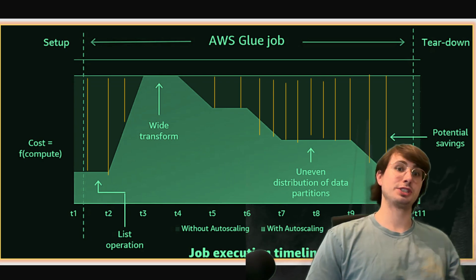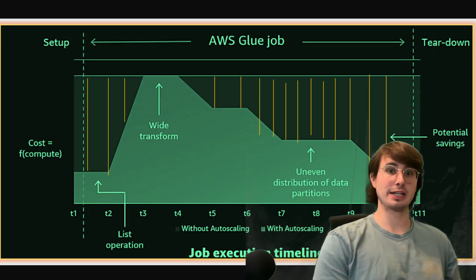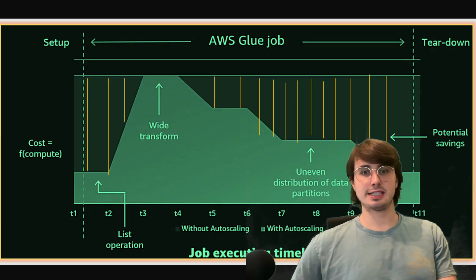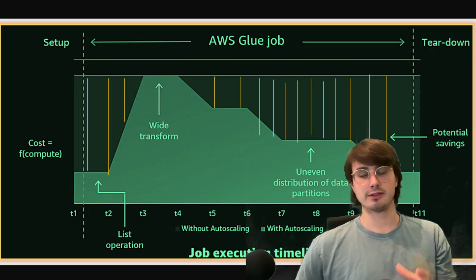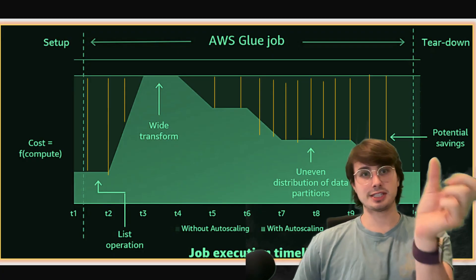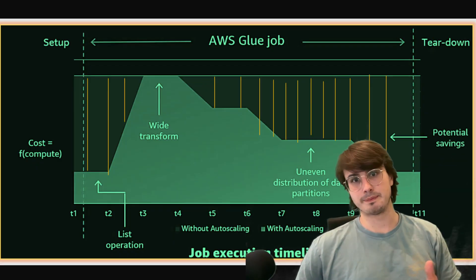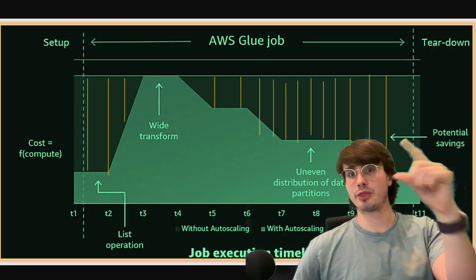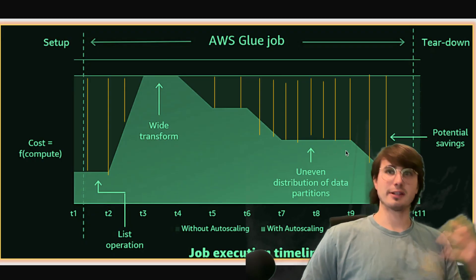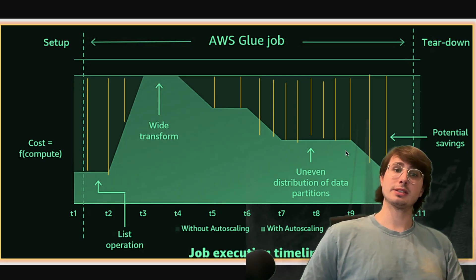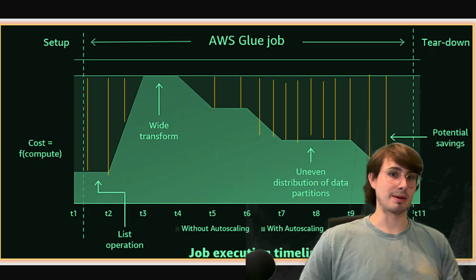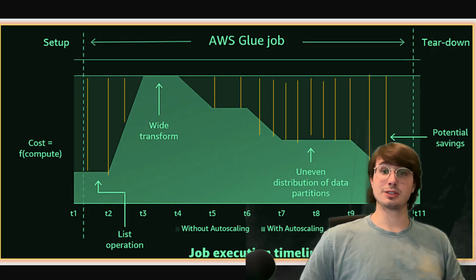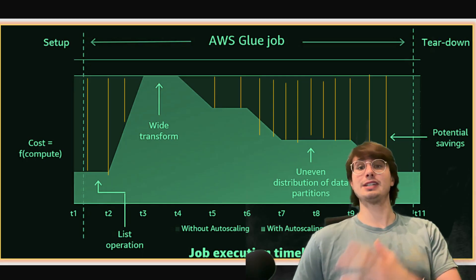Another thing you can do is use pushdown predicates and pushdown predicate filtering in Glue dynamic frames to minimize data loading and reduce IO costs. What that does is filter the actual collection of what data you're getting from the data frame to just that specific filter, so it doesn't query the entire data catalog — it just queries pieces that match, for example, year 23 and month 06. Finally, think about using column pruning: select only the required columns during data ingestion to reduce memory and computation. Don't just ingest every dataset with everything included — normally you don't need all the data, so cut out what you don't need.